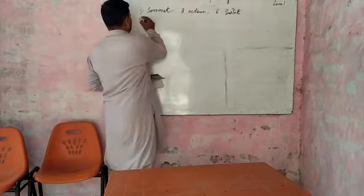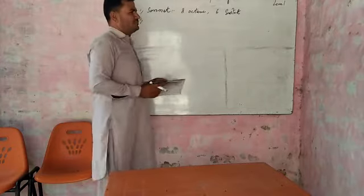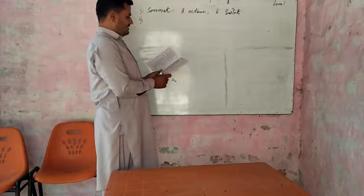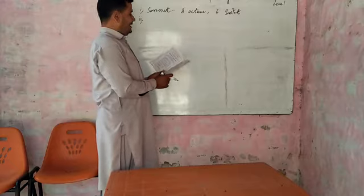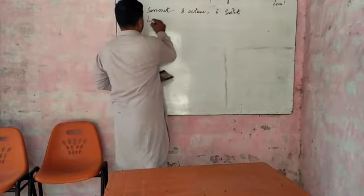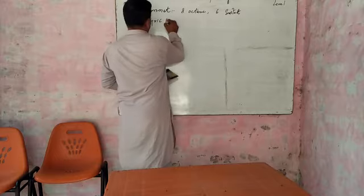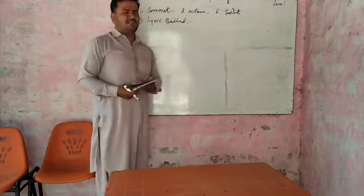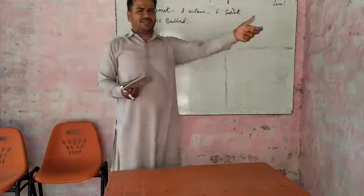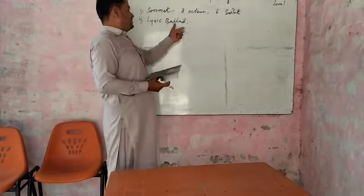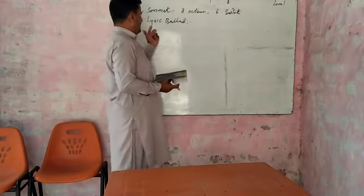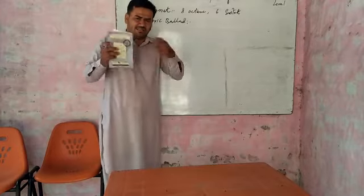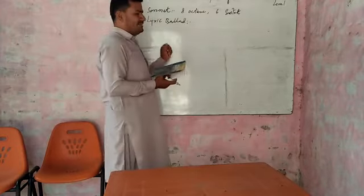The second form produced by William Wordsworth is the Lyrical Ballad. The lyrical ballad form is seen in 'Lucy Gray' used in this book. This one is a combination of two forms: lyrical and ballad.